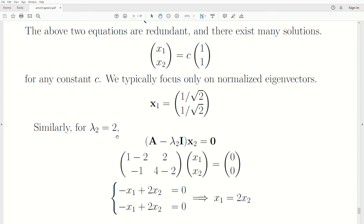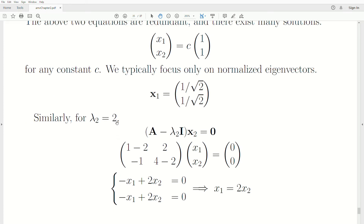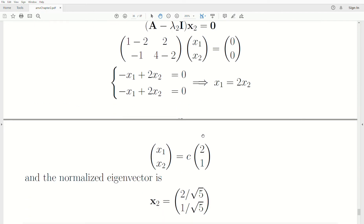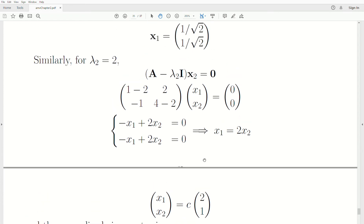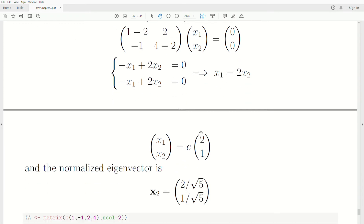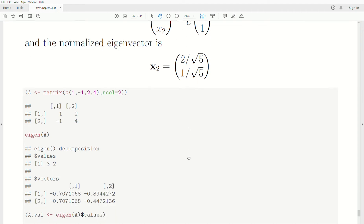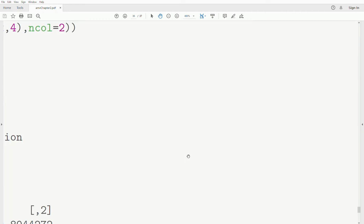Now we do the same thing for here. We plug in 2 into this equation, solve it for x1 and x2, and we get this eigenvector. There's an infinite number of eigenvectors associated with that eigenvalue 2. So we normalize it and make that vector a length of 1.